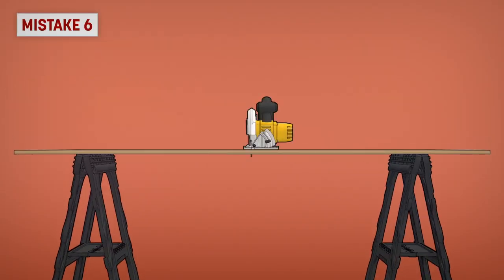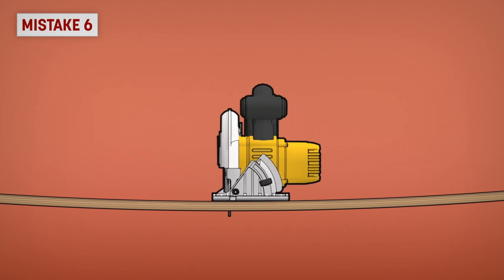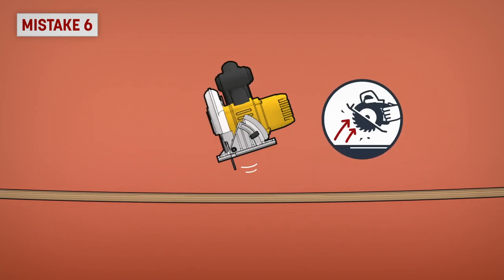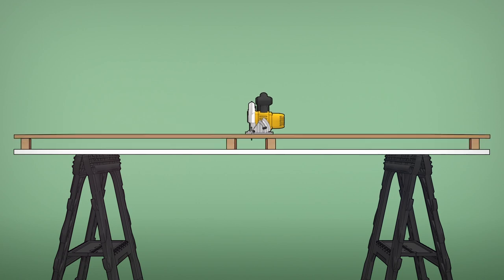Mistake 6: Cutting without supporting large panels. Without adequate support, the kerf will close down and pinch the blade, causing binding and kickback. You need to place small pieces of wood on either side of the cut and at both ends to properly support the workpiece.